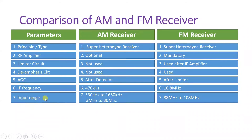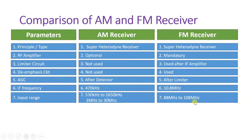Looking at the input frequency range, an AM receiver has two different ranges: one from 530 kilohertz to 1650 kilohertz, and a second range from 3 megahertz to 30 megahertz. In the case of an FM receiver, the frequency ranges from 88 megahertz to 108 megahertz.